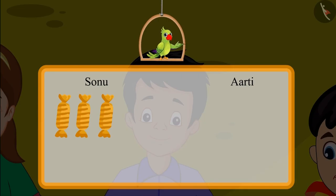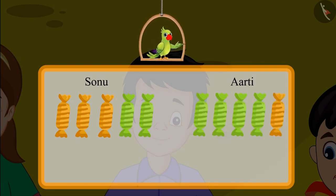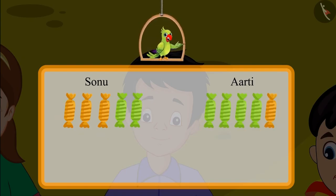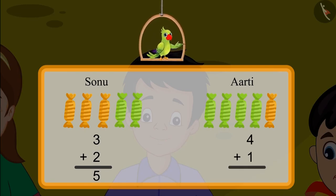Sonu got 3 yellow toffees and 2 green toffees. And Aarti got 4 green toffees and 1 yellow toffee. So 3 toffees and 2 toffees added together makes 5 toffees. 4 toffees and 1 toffee added together also makes 5 toffees. This means that Sonu and Aarti both got exactly the same number of toffees. So children, it is possible to get the same answer by adding different numbers.